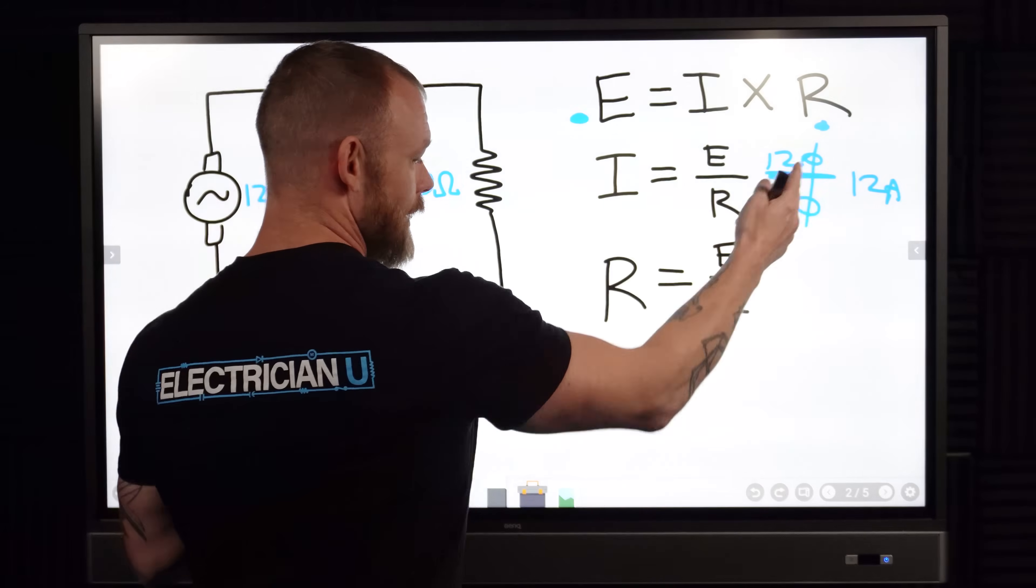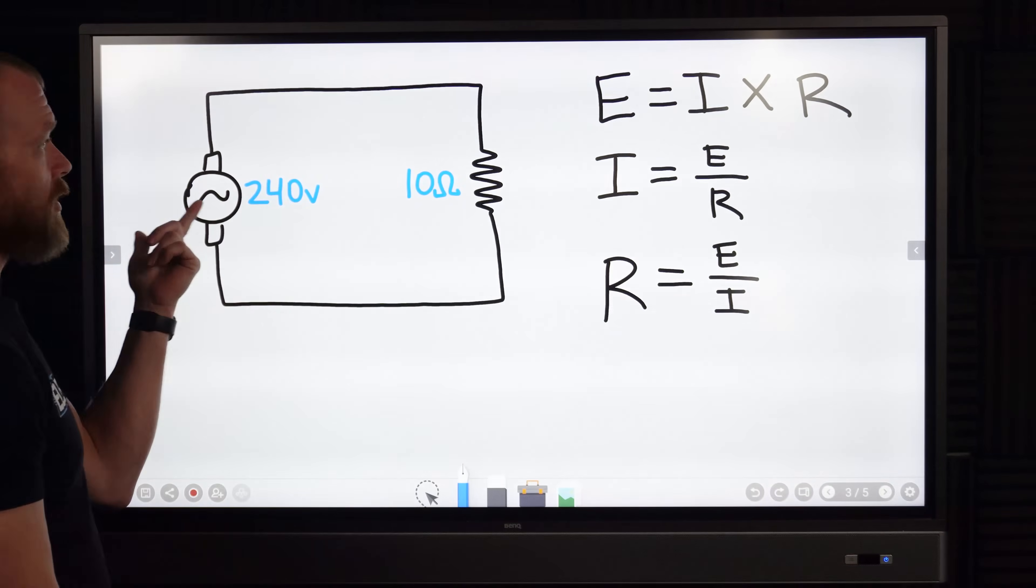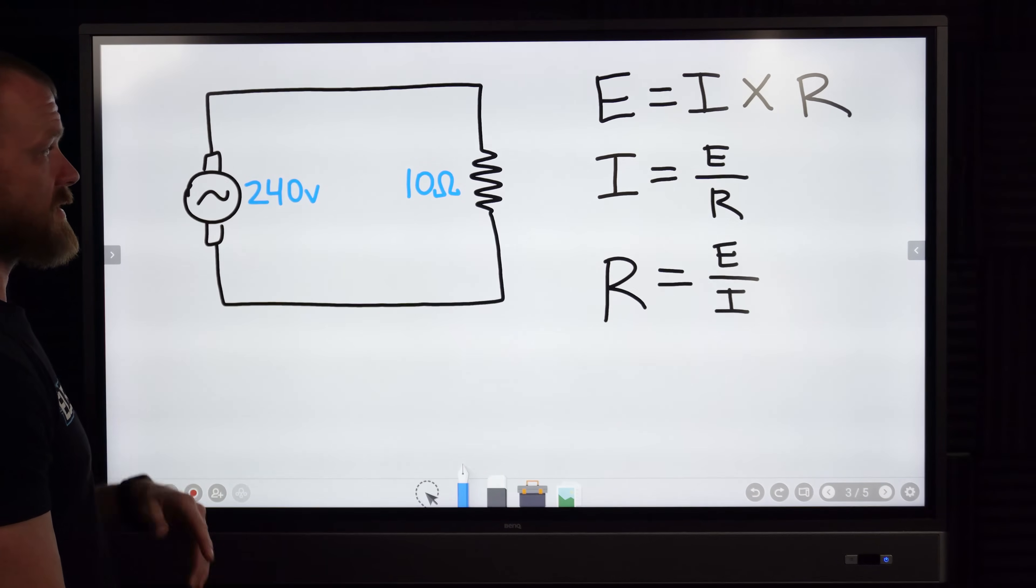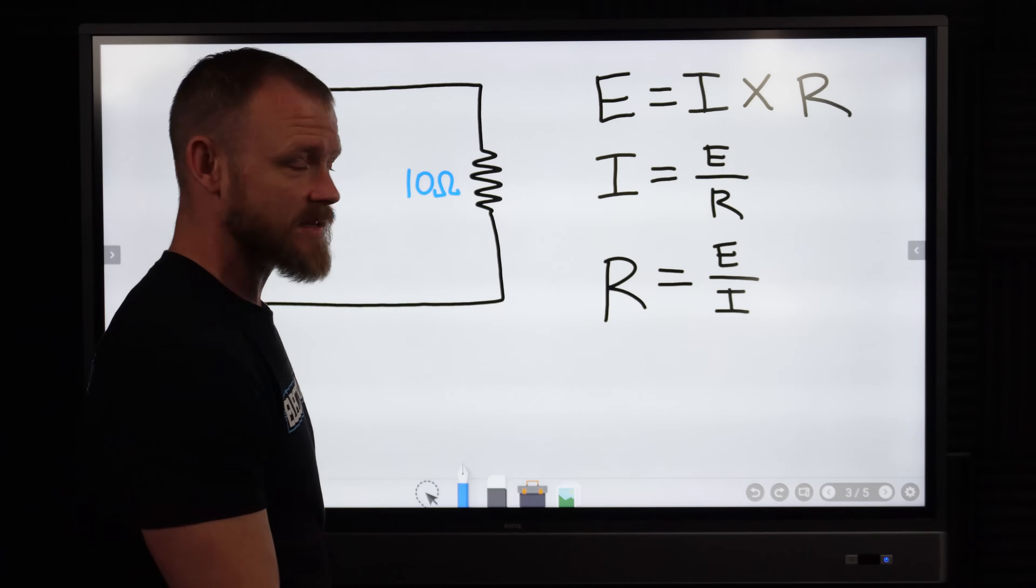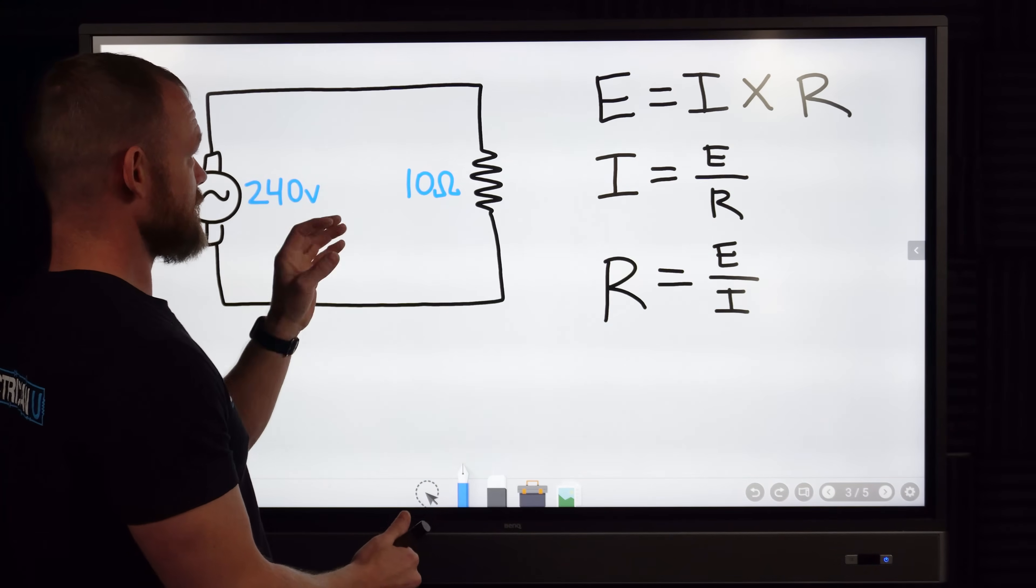So we know that with 120 volts and a 10 ohm resistor we have 12 amps of current running through. So what happens if we double our voltage and we go to 240 volts but we keep the resistance the same, just raising voltage to see what happens with current?